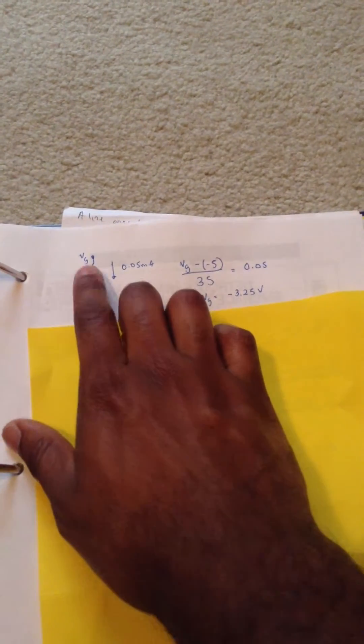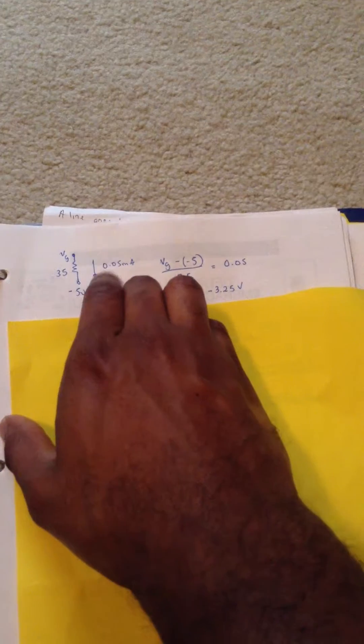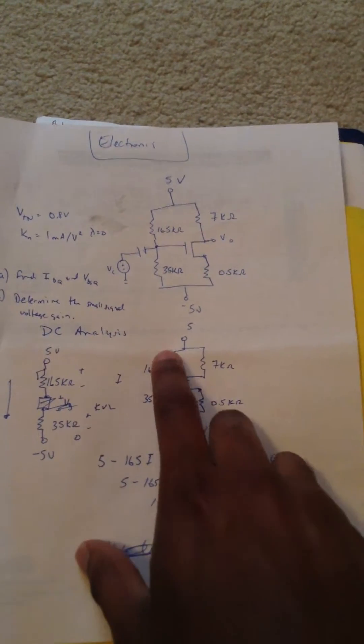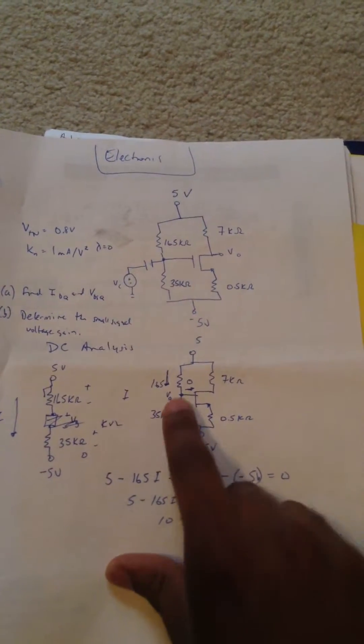So we have VG minus negative 5 divided by 35 equals that current that we just solved for, because here we know that the current here is equal to the current there. That's why we can just take that bottom half and solve for VG.